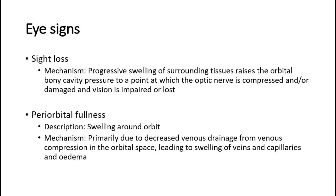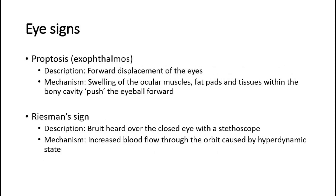Sight loss may occur due to progressive swelling of surrounding tissues, raising the orbital bony cavity pressure to a point at which the optic nerve is compressed or damaged and vision is impaired or lost. Periorbital fullness is primarily due to decreased venous drainage from venous compression in the orbital space, leading to swelling of veins and capillaries and edema. Proptosis, also called exophthalmos, is the forward displacement of the eyes, due to swelling of the ocular muscles, fat pads, and tissues within the bony cavity pushing the eyeball forward.